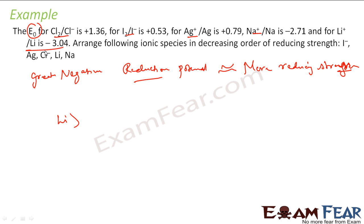So lithium is the highest, and then we have sodium. And then we have all positives. So then it will be iodine, 0.53, then it will be silver, then it will be Cl-.